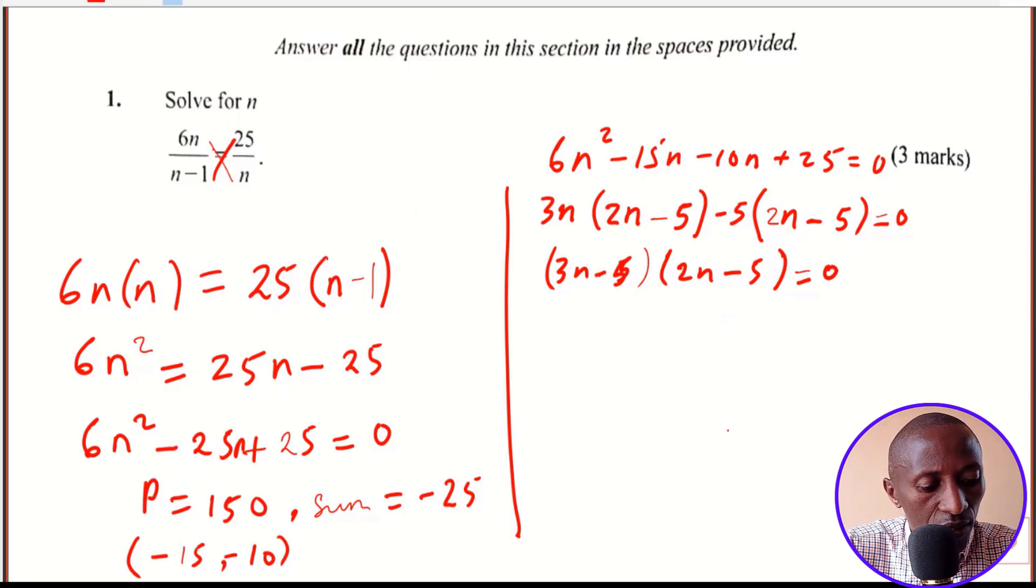So in the first part of this answer, we have 3n minus 5 is equal to 0, and that gives us 3n equals 5. That means dividing both sides by 3 gives us n is equal to 5 over 3, which we show in mixed form as 1 and 2 over 3.